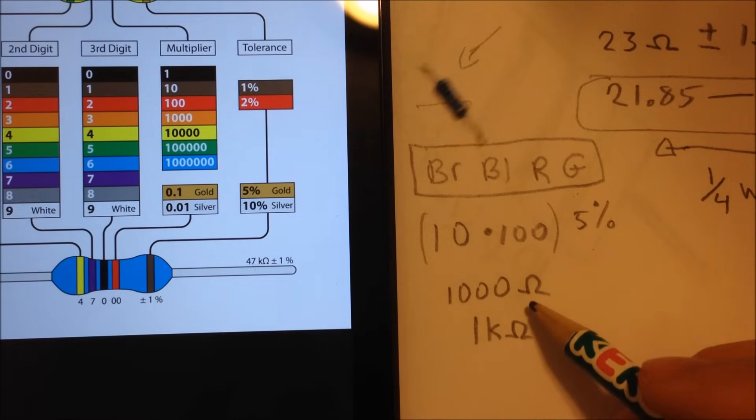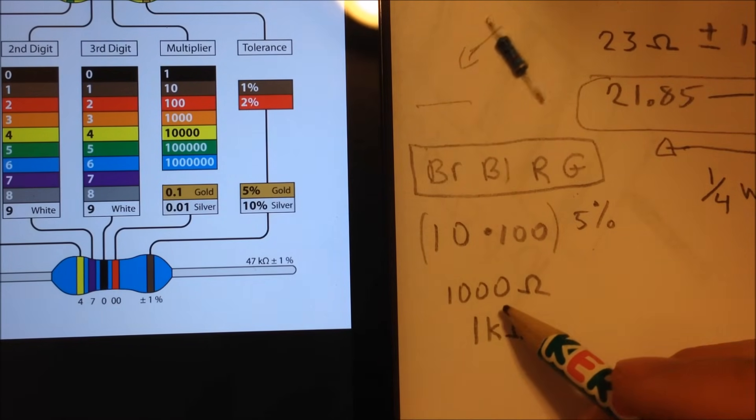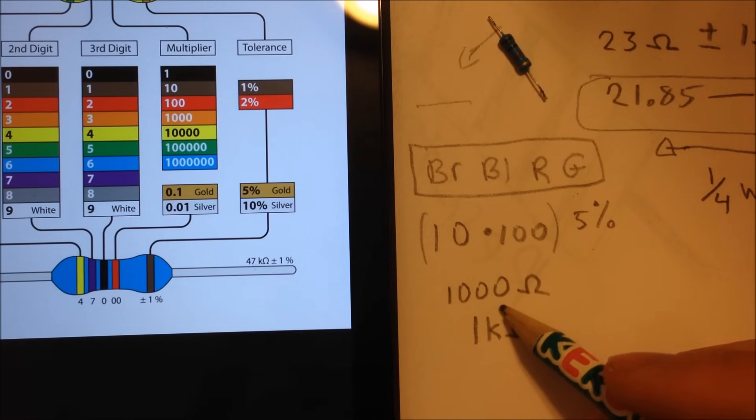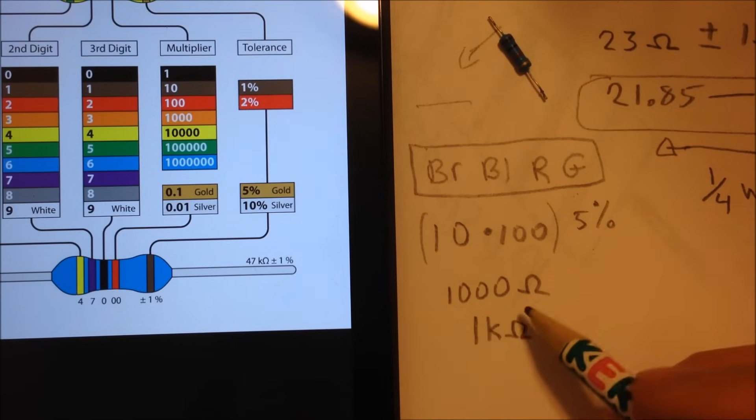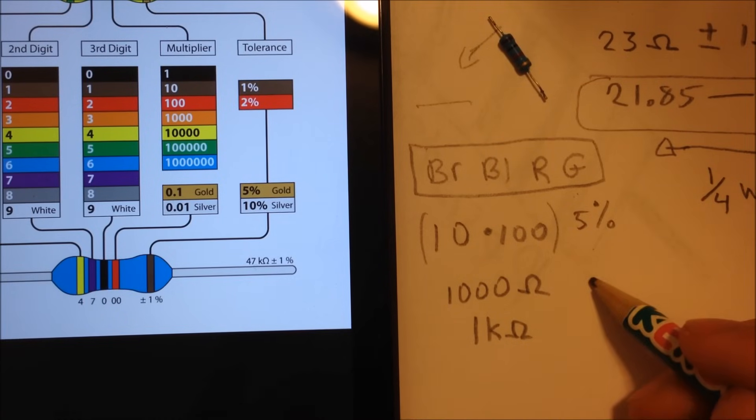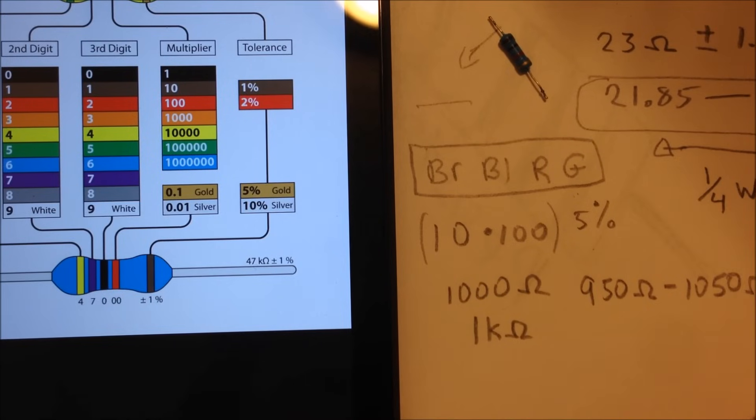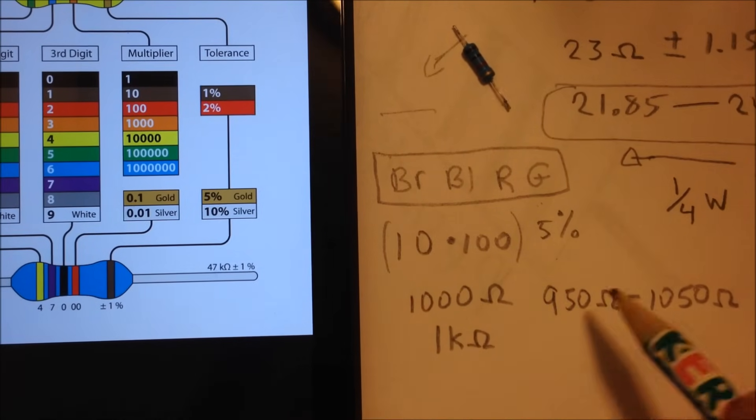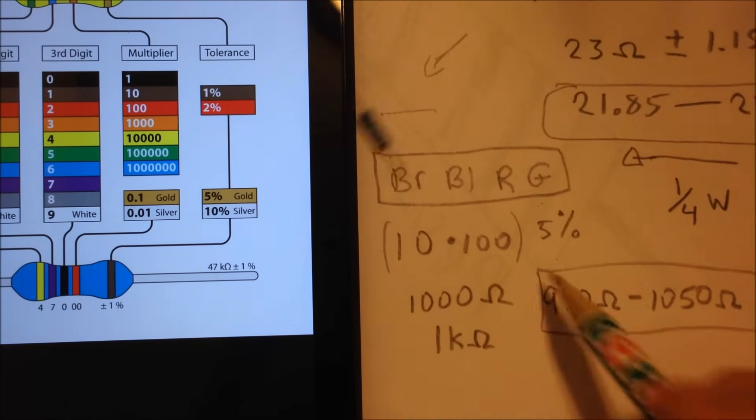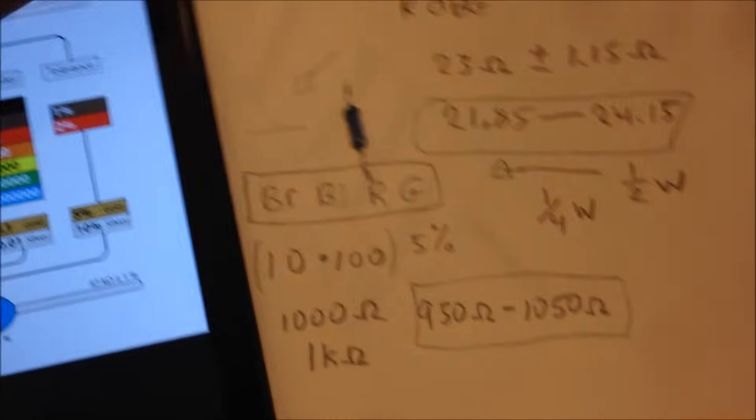So if you take 5% of 1,000, it's 50. So the value of this 1K ohm resistor could be between 950 ohms and 1,050 ohms. So that's the value of that.